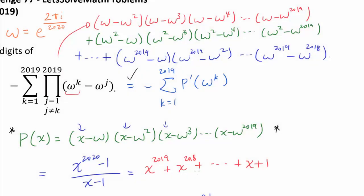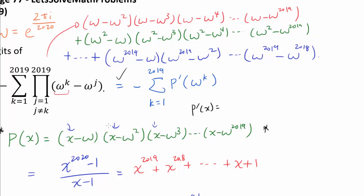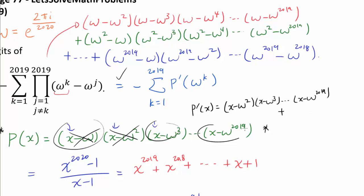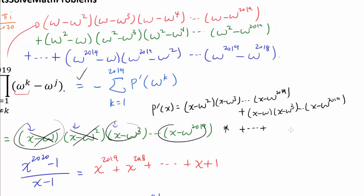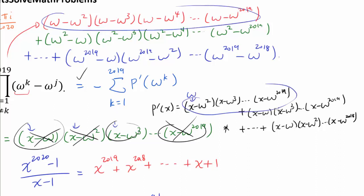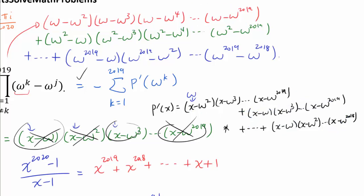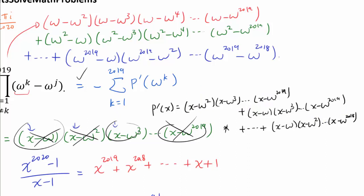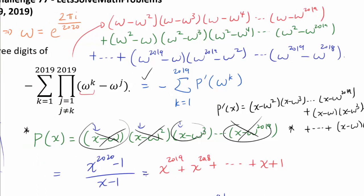To establish the equality, let's think about what p prime of x is. By the product rule, p prime of x is a sum of terms: every factor except x minus omega, plus every factor except x minus omega squared, plus every factor except x minus omega cubed, and so on. When we plug in omega, we get the expression we want plus a bunch of zeros, because the term x minus omega equals zero for all other summands. Similarly, when we plug in omega squared, we get the corresponding expression, and the rest go away — all the way to omega to the 2019. So this entire thing is precisely our original sum.